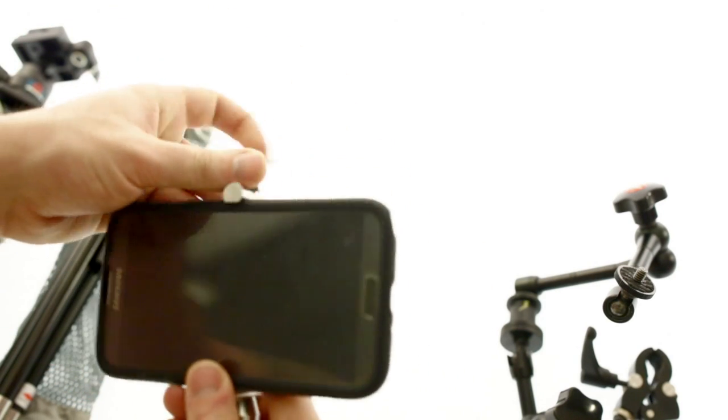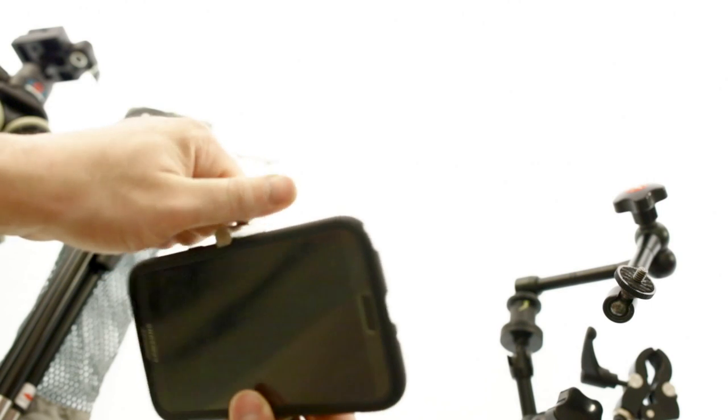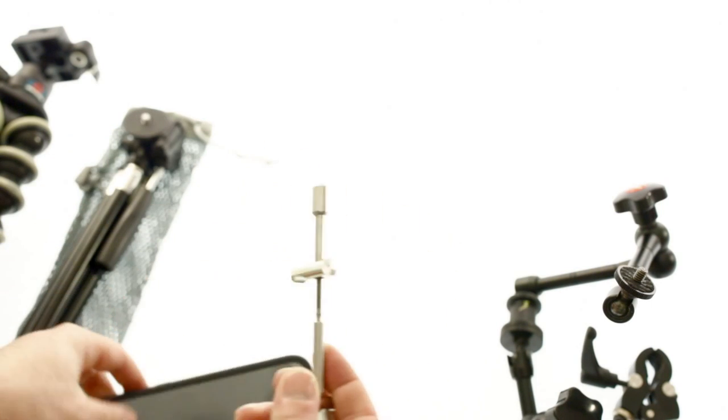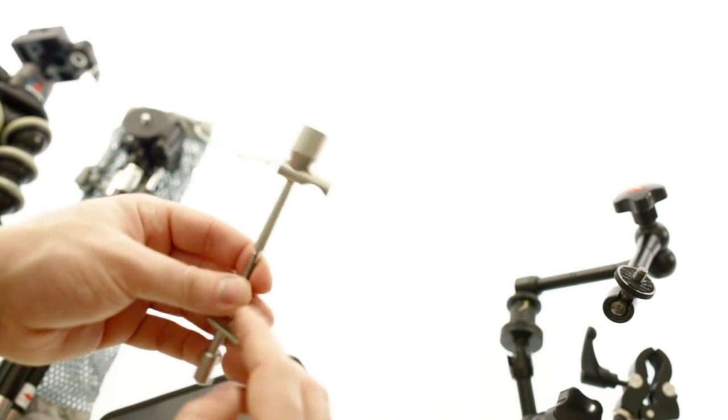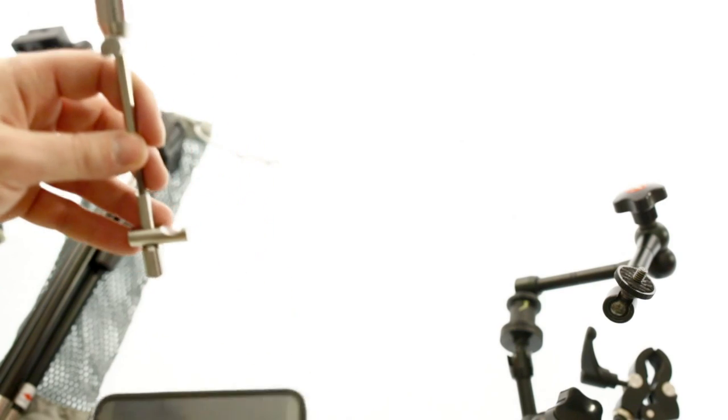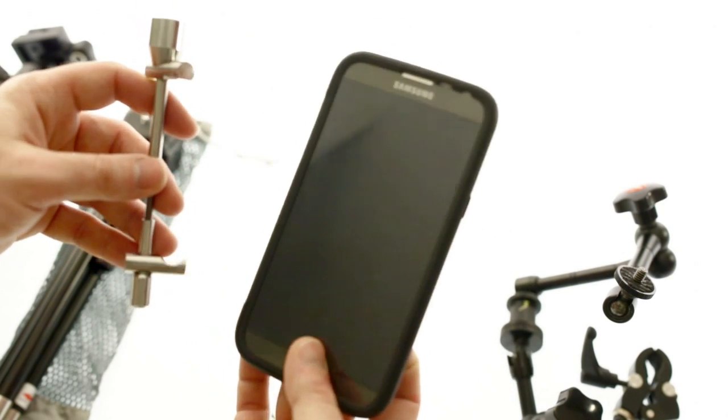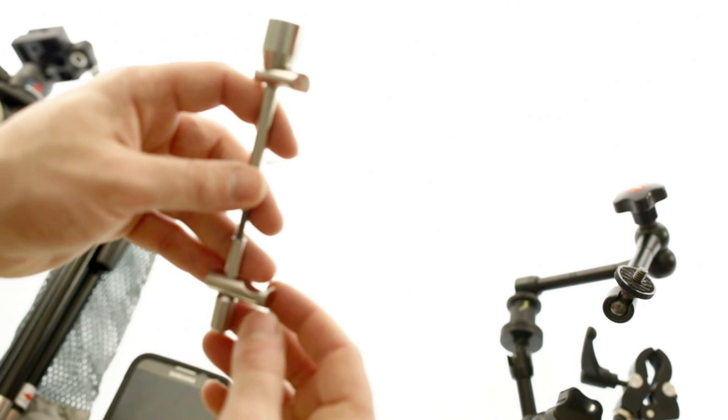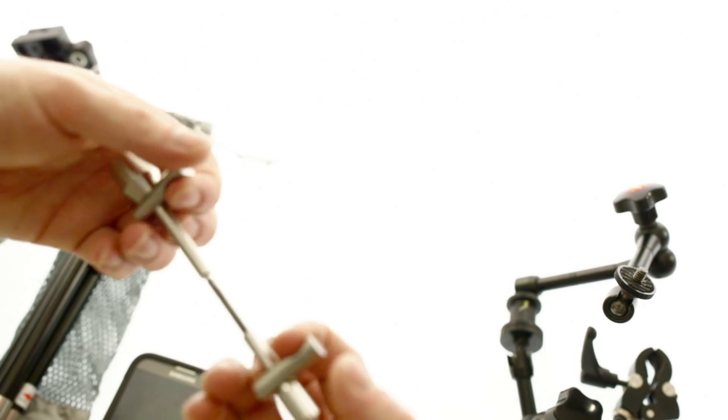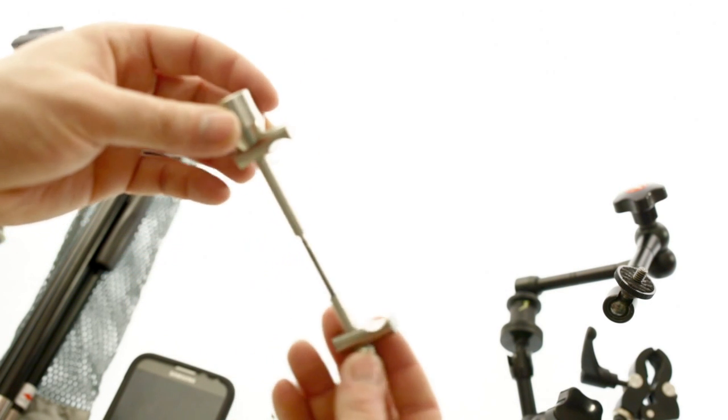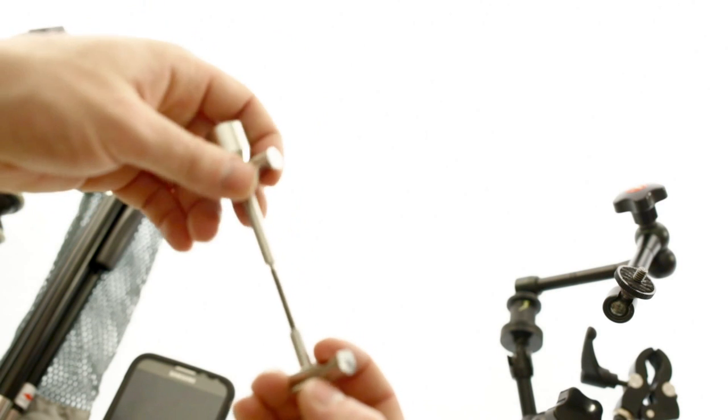What I would have liked is if there was some sort of softer grip on these two areas, so that you wouldn't have to use a case with it, because right now I've got my phone in a case, this is the Galaxy Note 2. The reason for that is just not because it doesn't work without a case, but it just has a lot more grip when it's in a case.